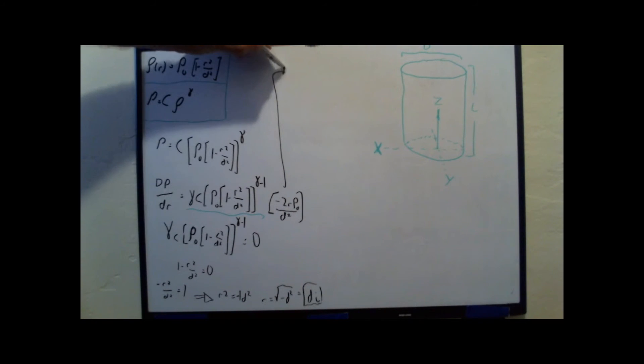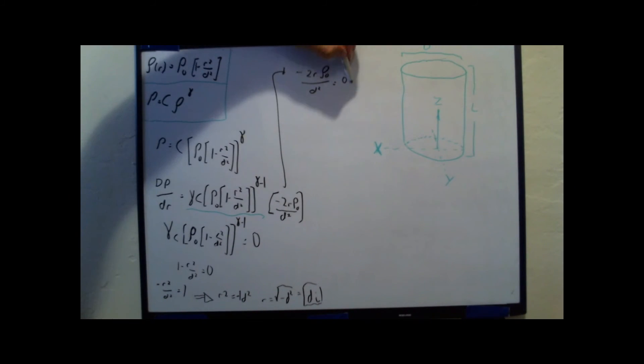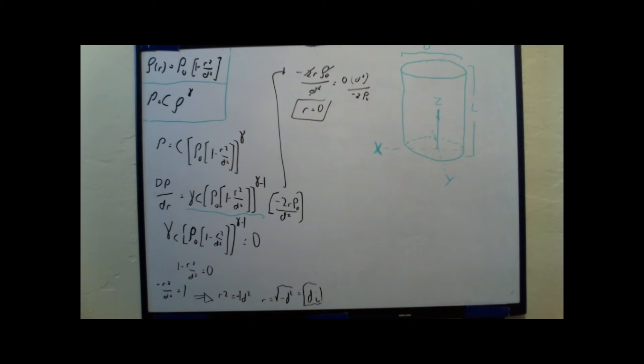Let's try the other one. This will give me negative 2r rho naught over d squared equals zero. What am I going to do? I'm going to multiply this side by d squared. Cancel this. Then I'm going to divide by negative 2 rho naught, which will cancel this and this. And this will give me r equals zero. That is pretty.